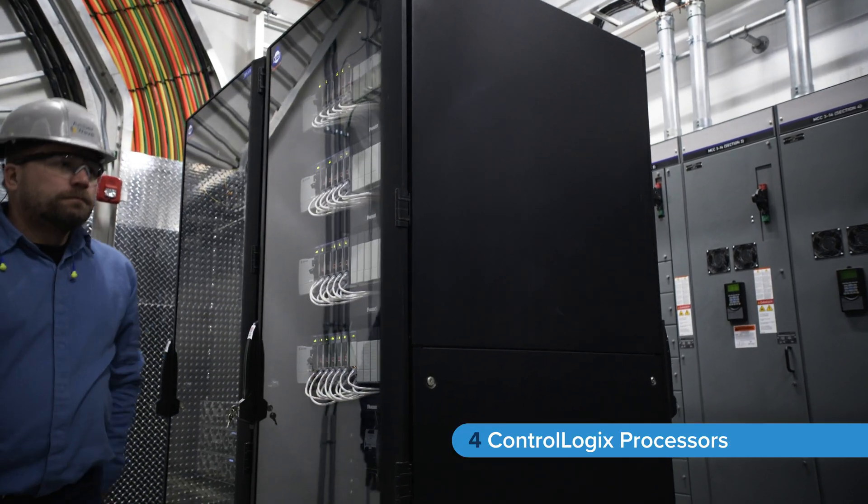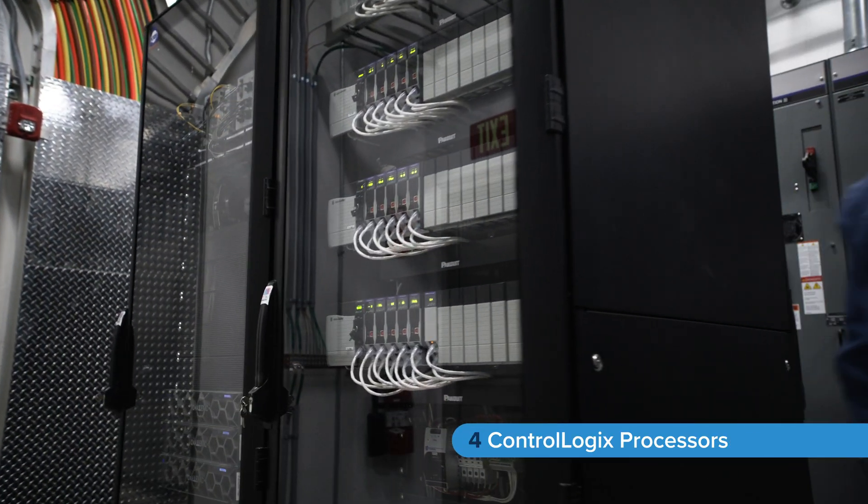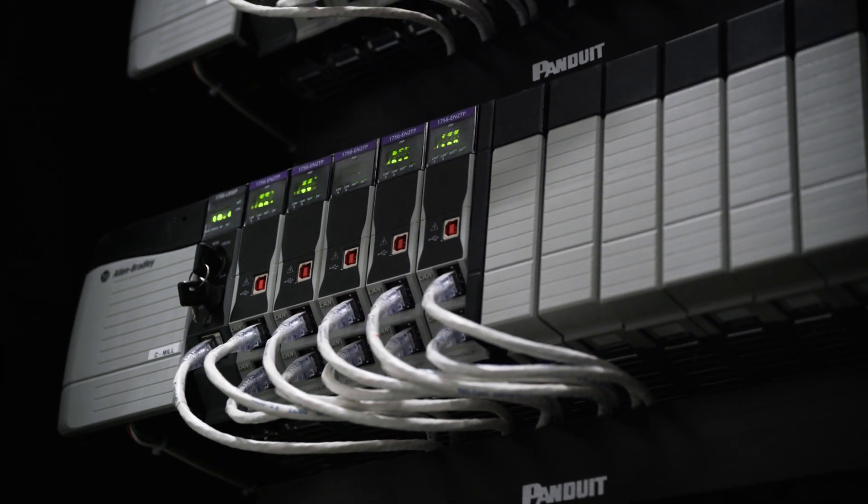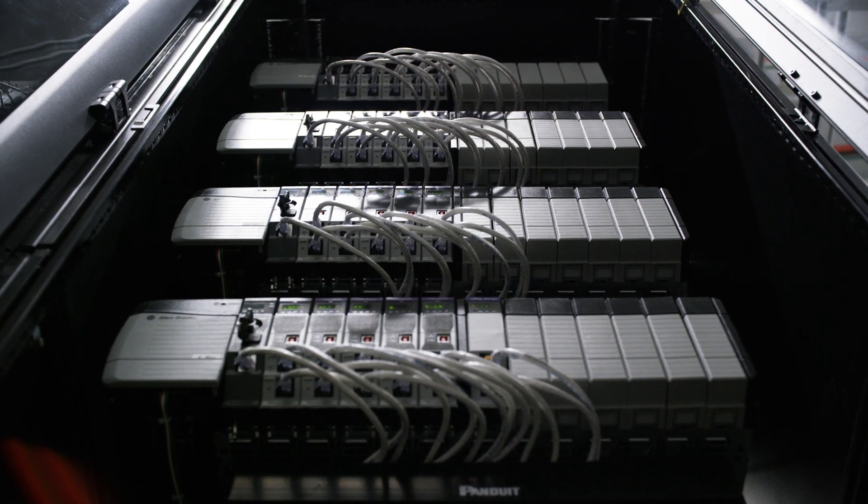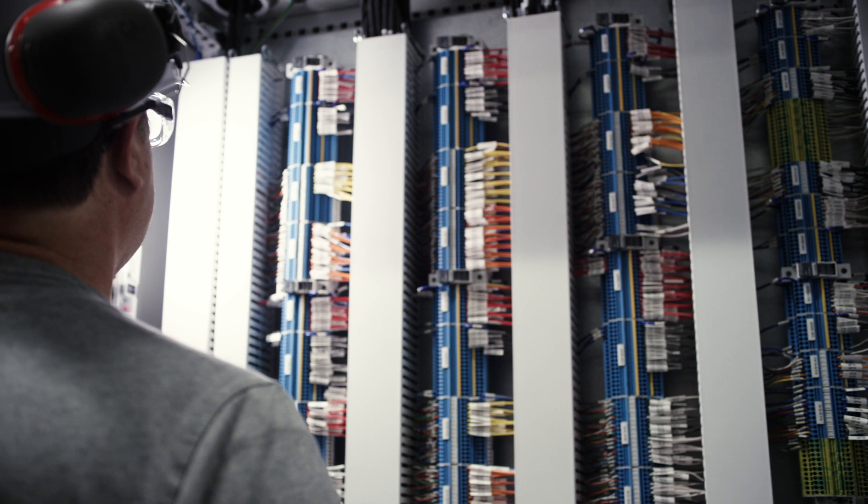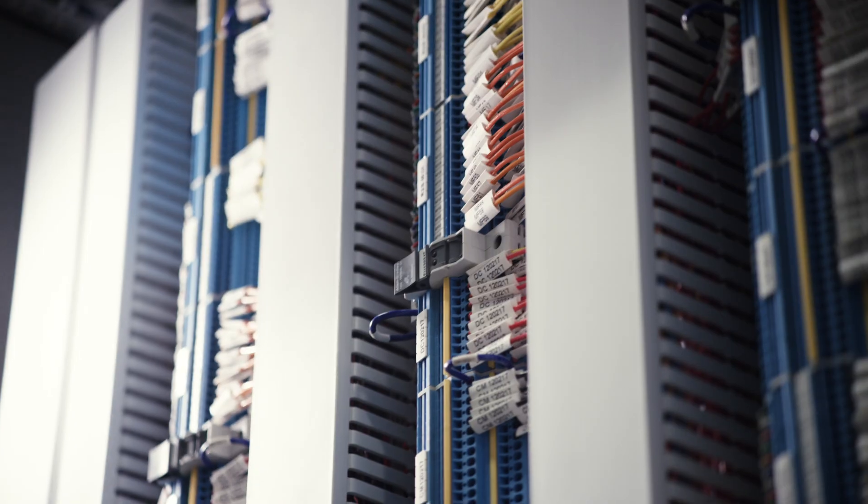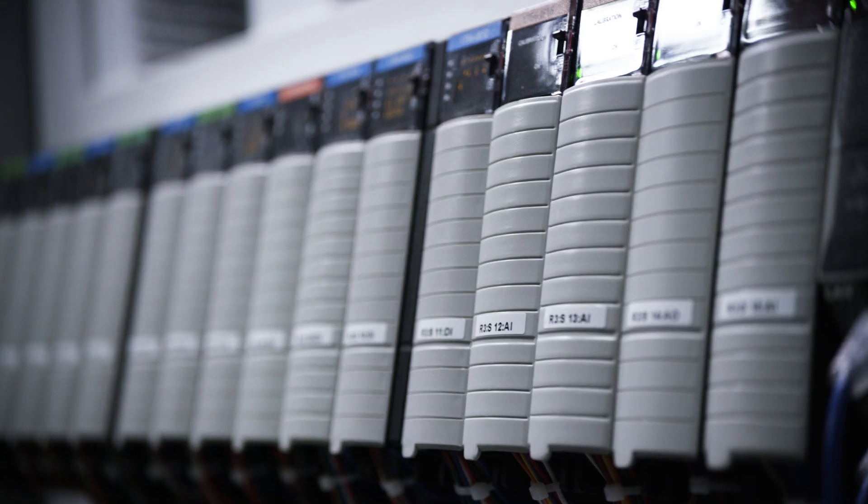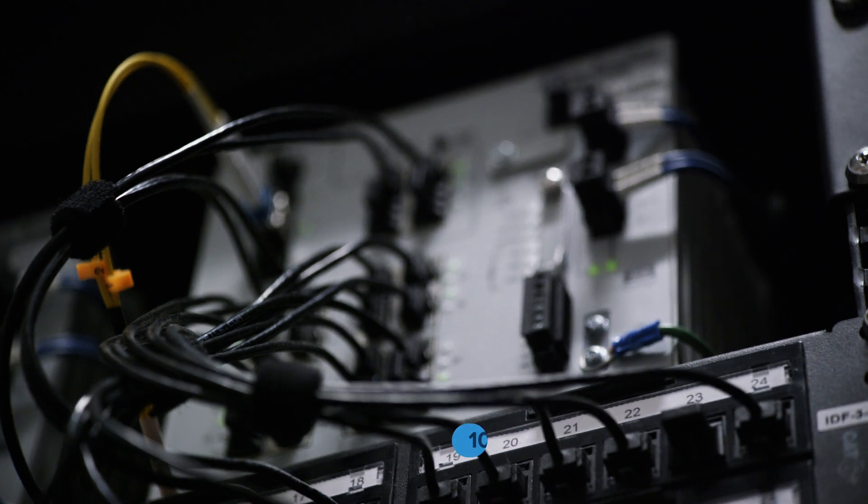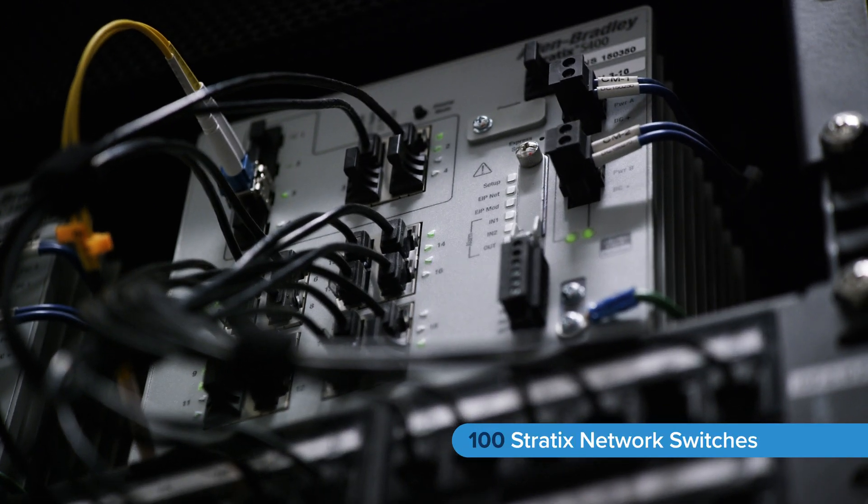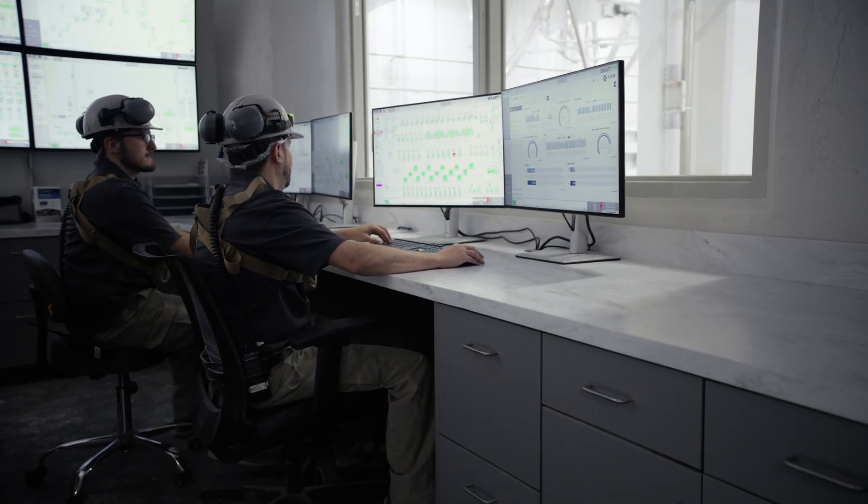Four Rockwell Automation ControlLogix processors take command of every facet of the process, including 1,200 IP addresses, multiple virtual servers, 650 motors, and OEM equipment with 40 Micro850 processors and 80 PV800 graphics terminals, all communicating through Ethernet IP.